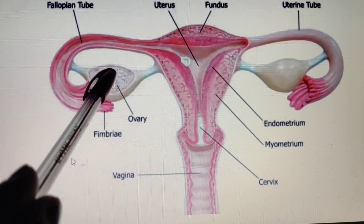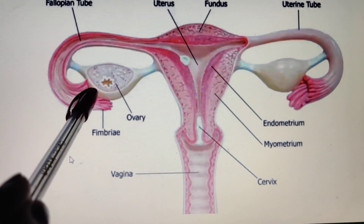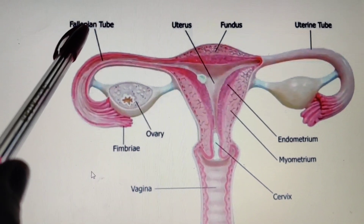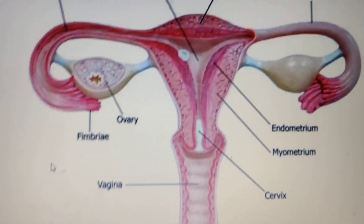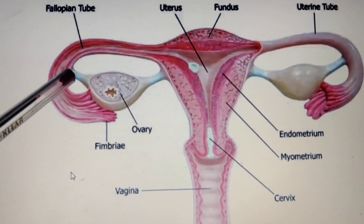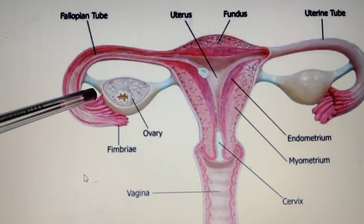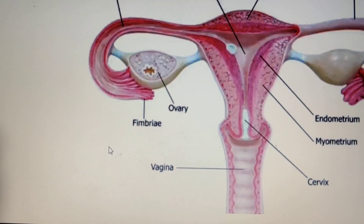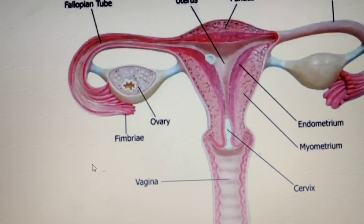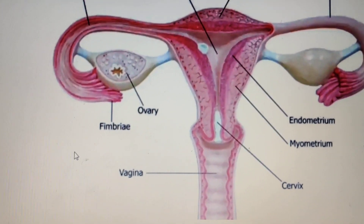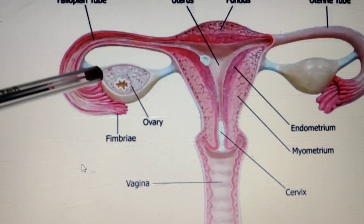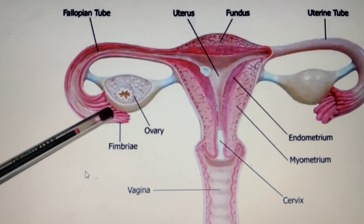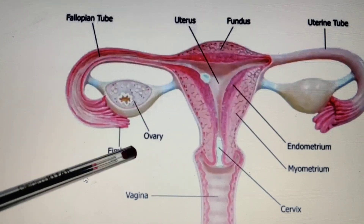After the ovaries, next is the fallopian tube. This fallopian tube expands in the form of this funnel-shaped structure called the infundibulum. At the base of this infundibulum, these finger-like projections are present, which are called fimbriae.